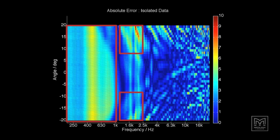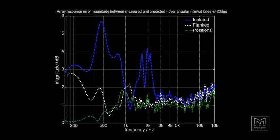A summary of the three error plots gives a simple average. Blue is the error between measured and predicted results using isolated data, white is using flanked data and green is using positional data. Remember the positional data is calculated using BEM. Flanked and isolated data can be measured directly.